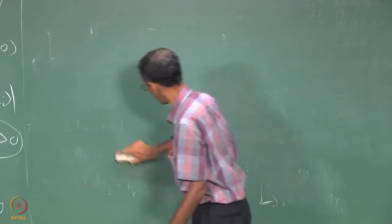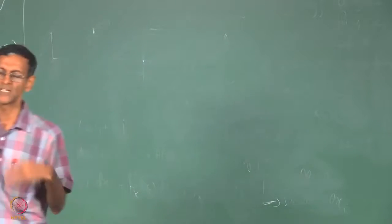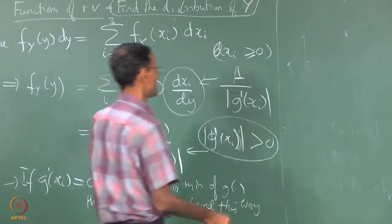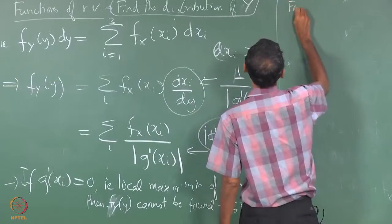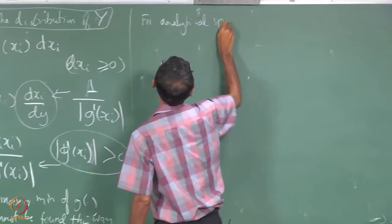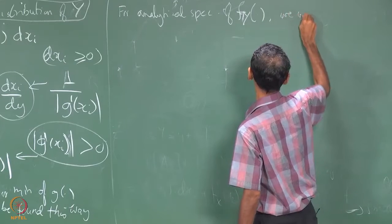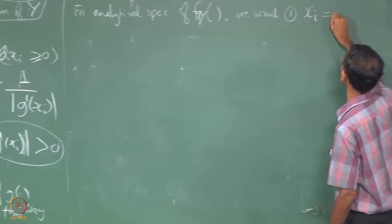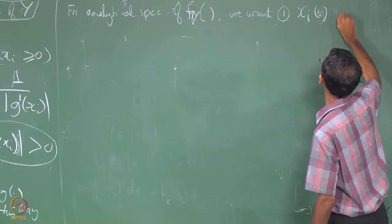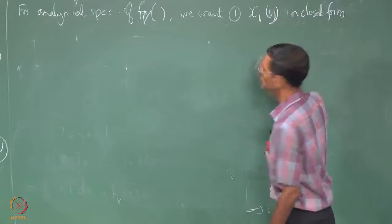Okay, so what do we need for the analytical method to complete, to be able to write to do this with just your pen and paper without doing any actual number crunching? We want X_i as a function of y, we want it in close form.